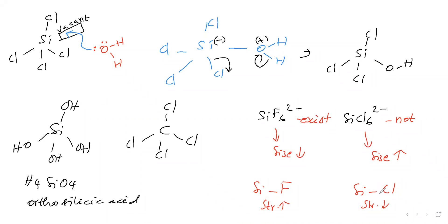Next, allotropy. Allotropes have the same chemical properties but different physical properties. Two types are possible: crystalline and amorphous. The crystalline allotropes of carbon include diamond, graphite, and fullerenes.